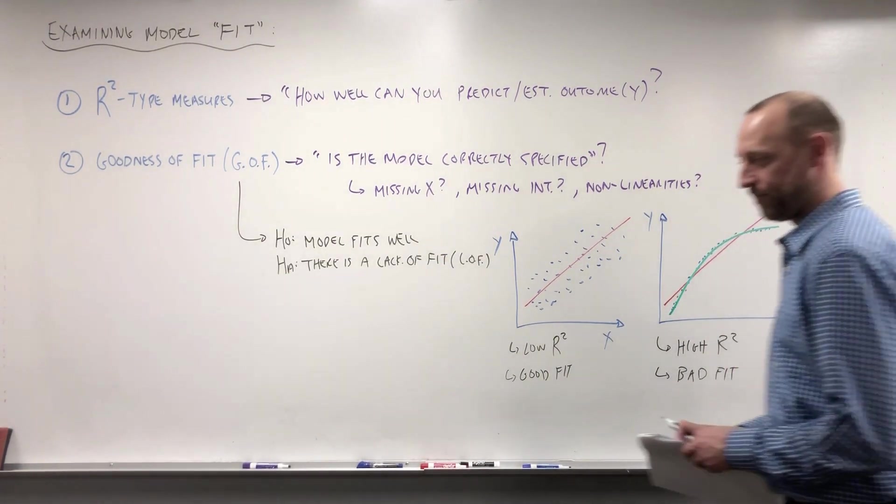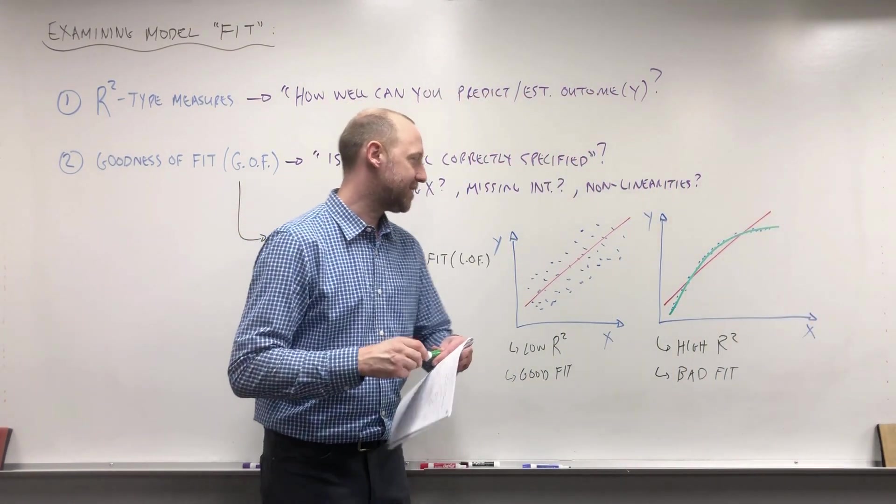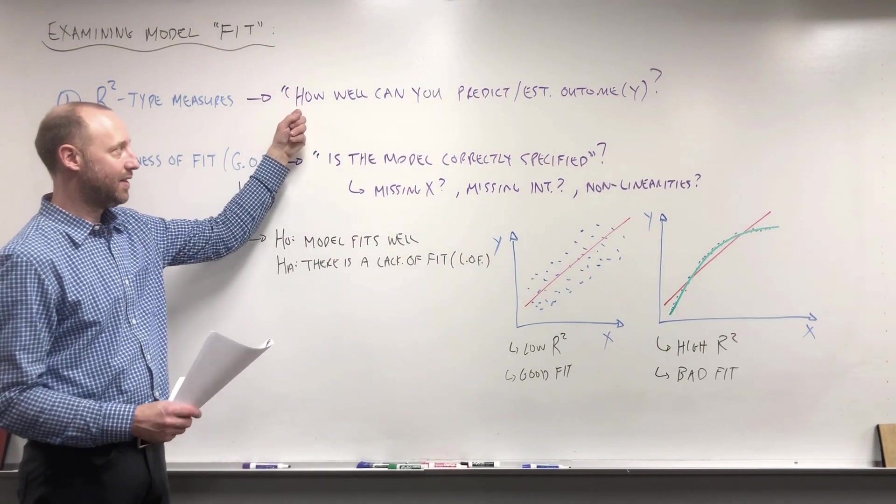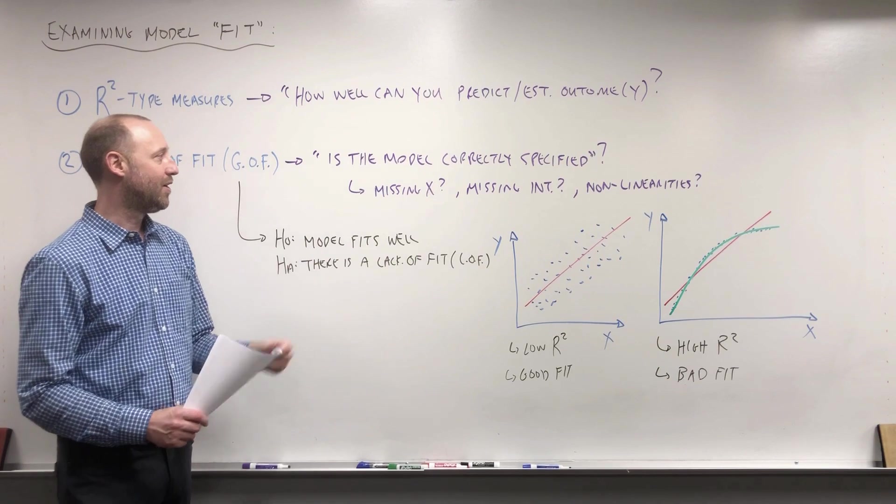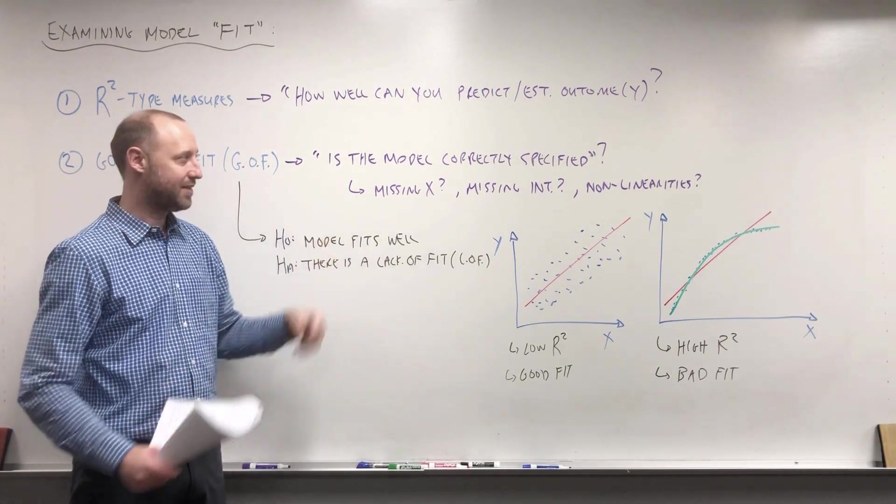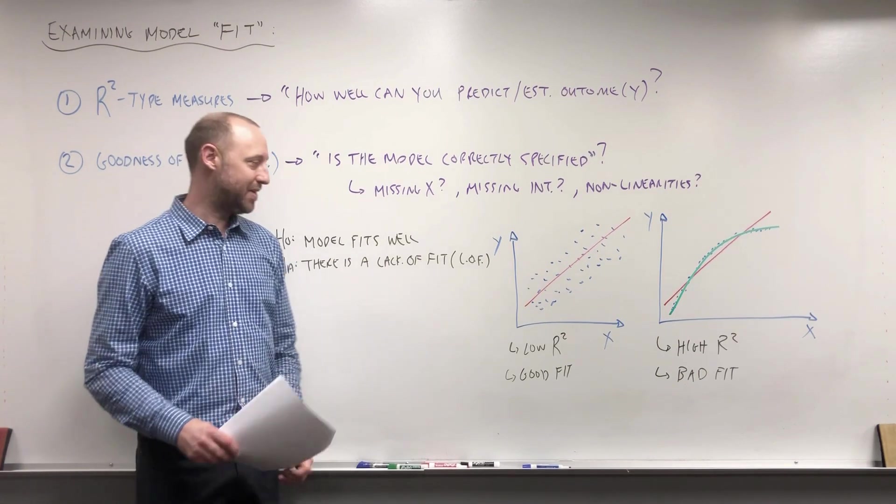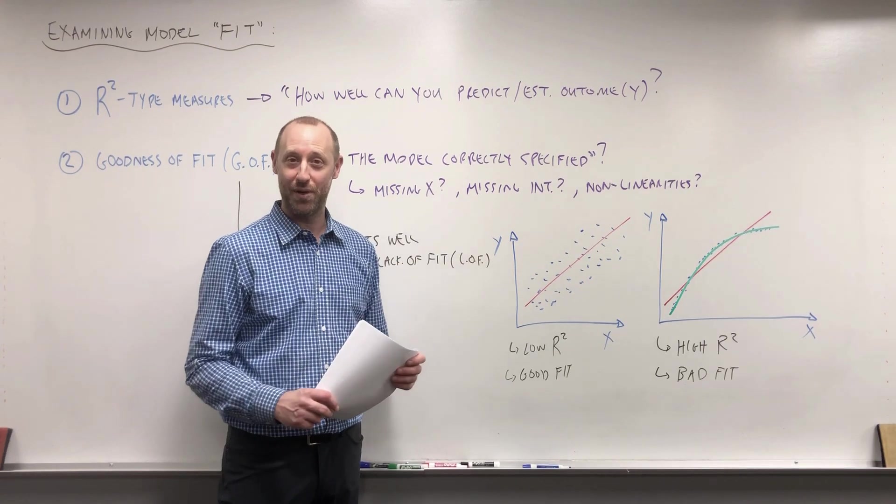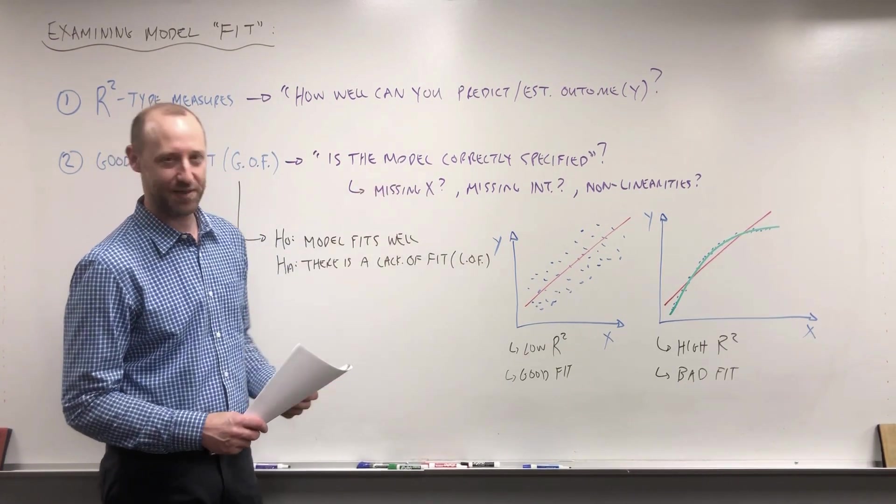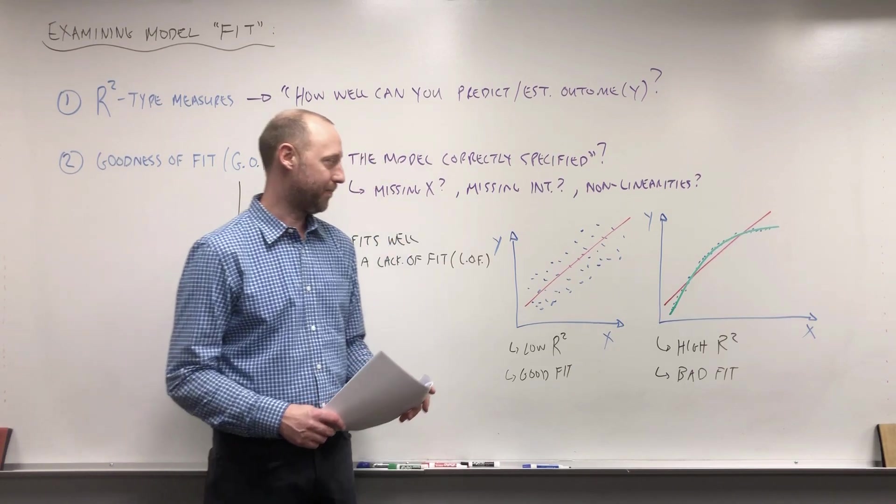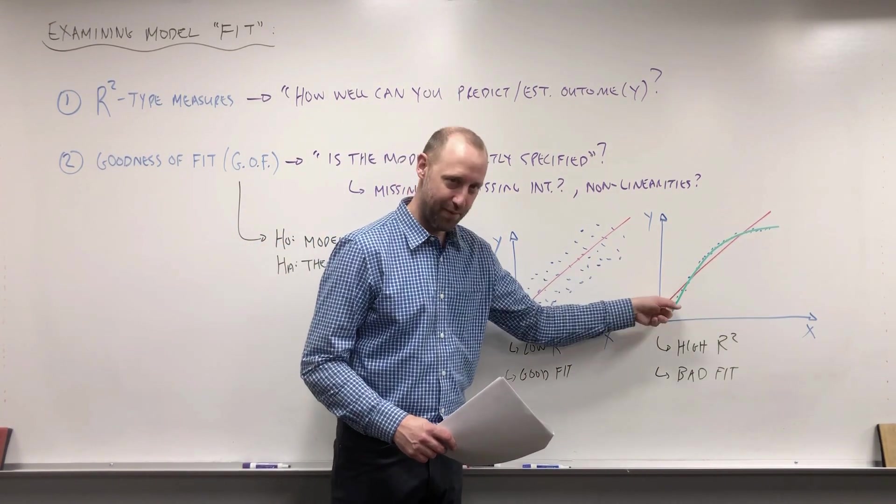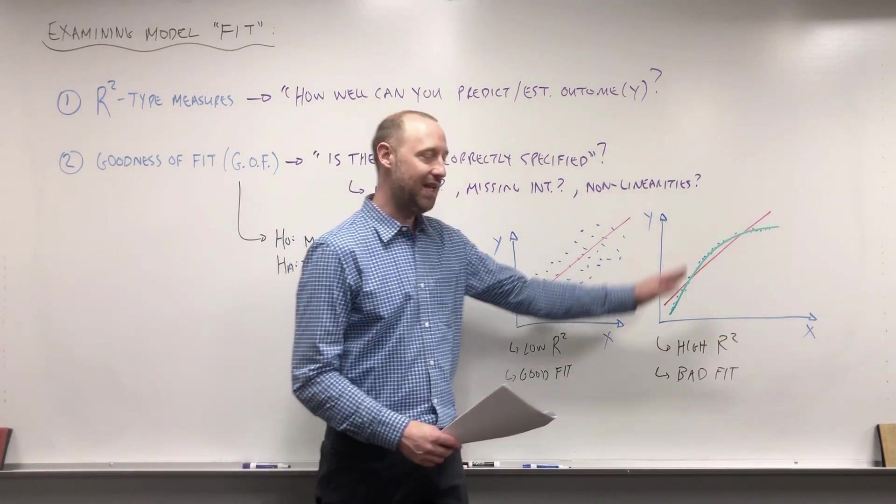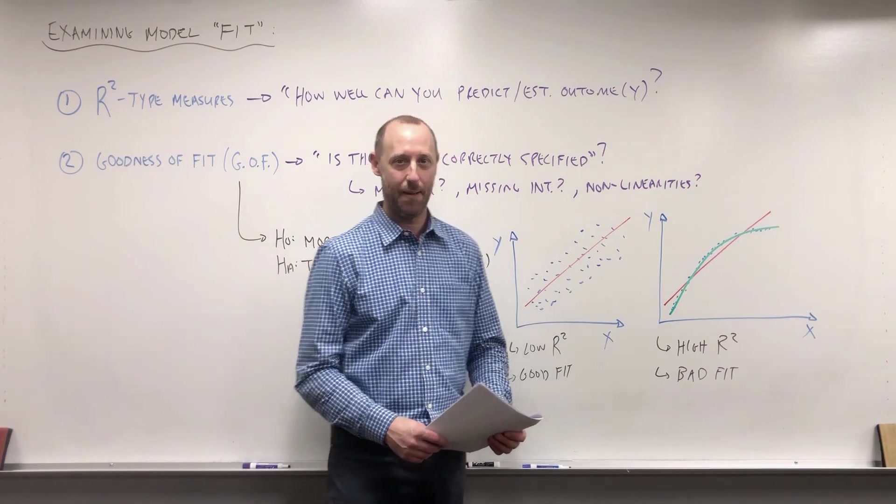These were exaggerated examples but to try and tease apart the idea of what does it mean to talk about how well your model can predict the outcome versus is it a good fit. Good fit, I always found when I do this stuff, is a little bit misleading in that this here is a good fit even though it's not a strong predictive model. Good fit means have we correctly specified the model - is there anything missing from our model? This one here with the red line, before I drew in that green, there's actually a poor fit. The model was wrong even if it was going to give us good predictions - there was a lack of fit there.